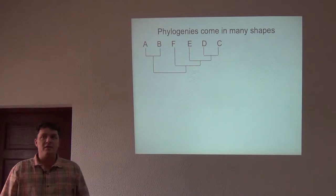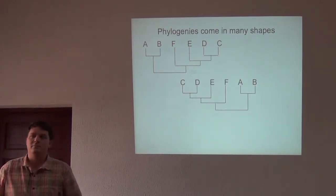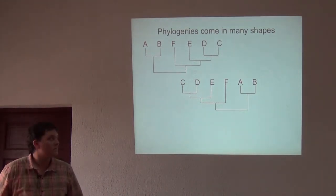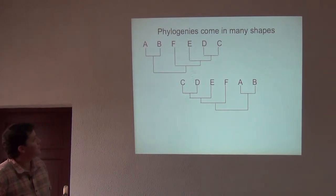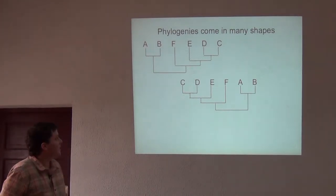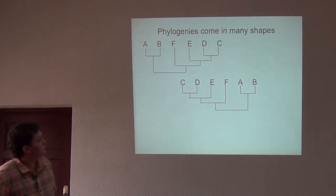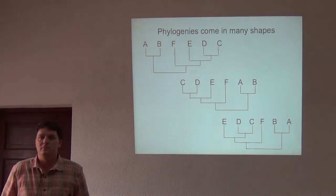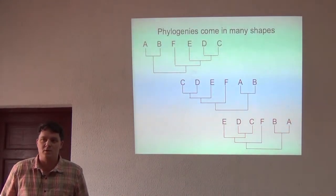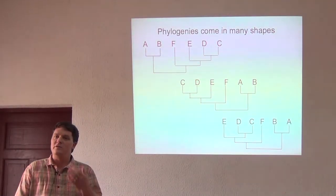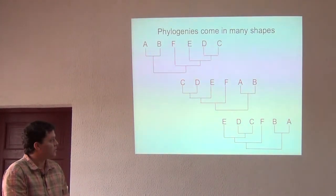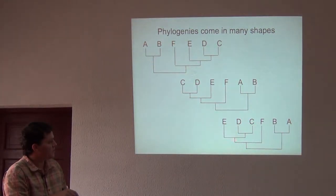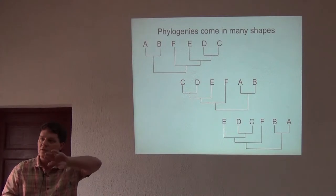Here's another one for you. How about this tree versus this tree? That's the same thing, right? I just turned it over. This one's really different, though — got to admit, right? That's the same thing too. If you start at the tips and work your way back, you still come to the same conclusion. A and B are each other's closest relatives here. C and D are each other's closest relatives, and they're most closely related to E. So see how I've just swiveled the nodes on the tree?